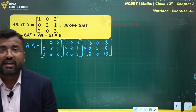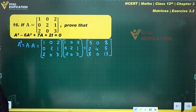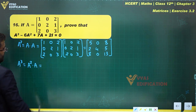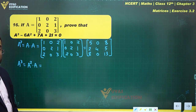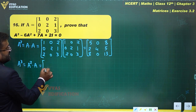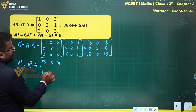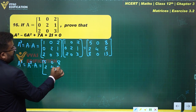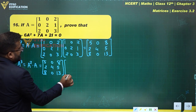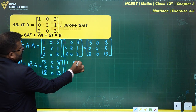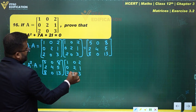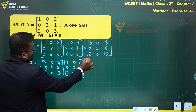Now we can find A³ as well. A³ = A² × A. We write A² as [5 0 8 / 2 4 5 / 8 0 13] and multiply it by matrix A, which is [1 0 2 / 0 2 1 / 2 0 3].